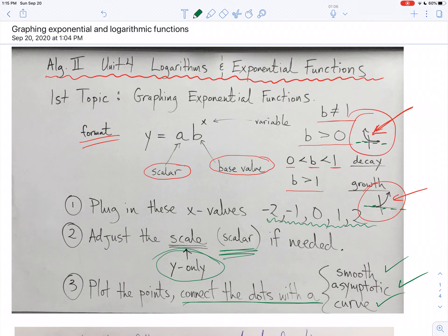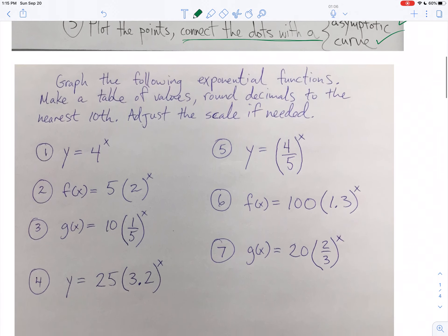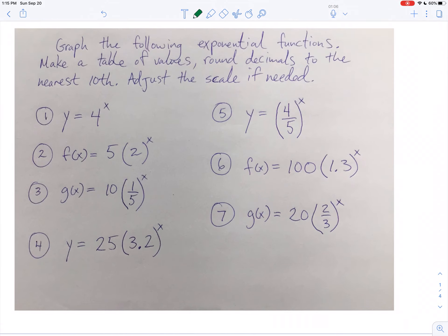So graphing exponentials, there's an overview. Here's the practice problems I want you to do. It says, graph the following exponential functions. Make a table of values. We're going to just work in decimal. Round all decimals to the nearest tenth. Adjust the scale if needed. You're going to plug in negative 2, negative 1, 0, 1, and 2 for every single one of these. Get your output. Round it off to the nearest tenth. If there's a scalar, then adjust your scale. And then you'll have seven pictures there.